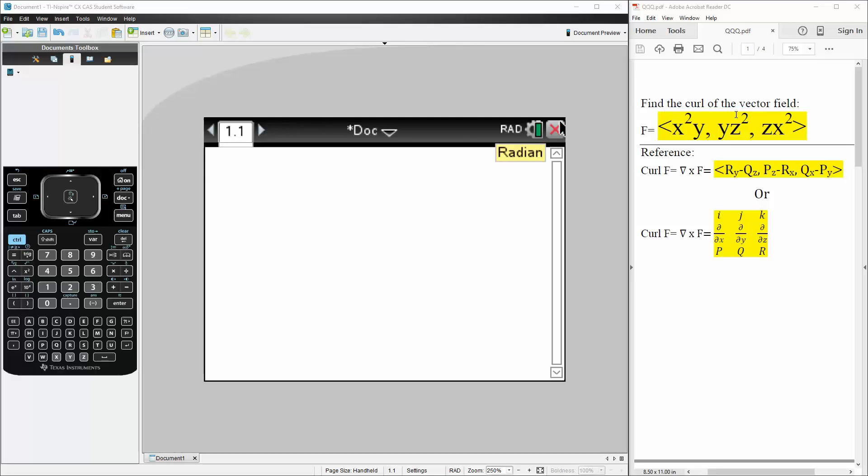In this problem we want to find the curl of the vector field x squared times y, y times z squared, z times x squared, and we will use this formula.